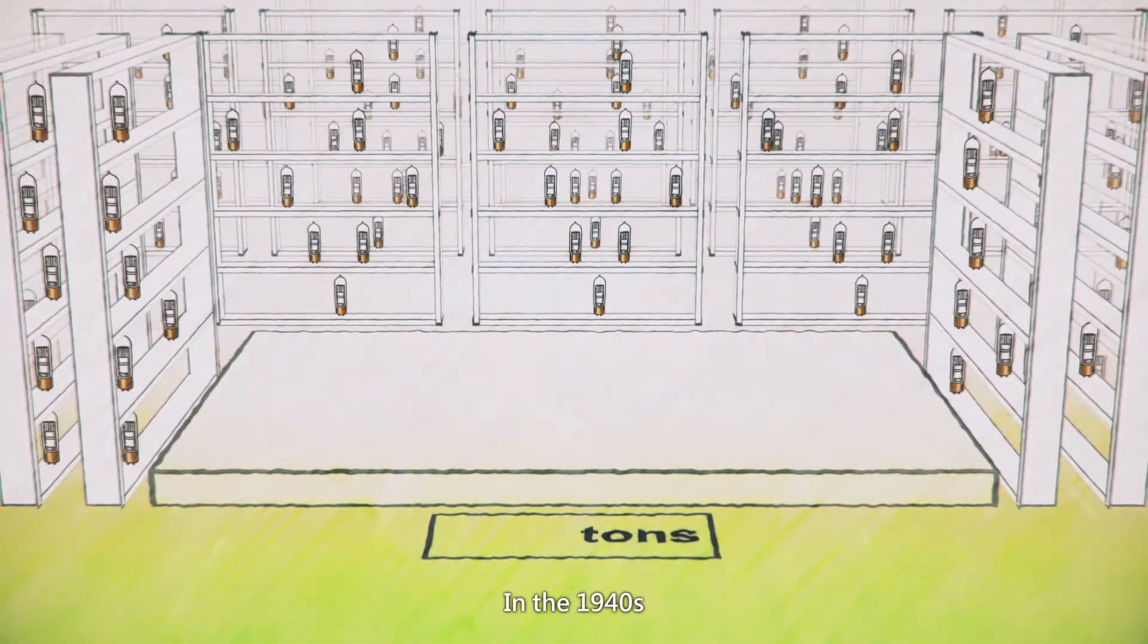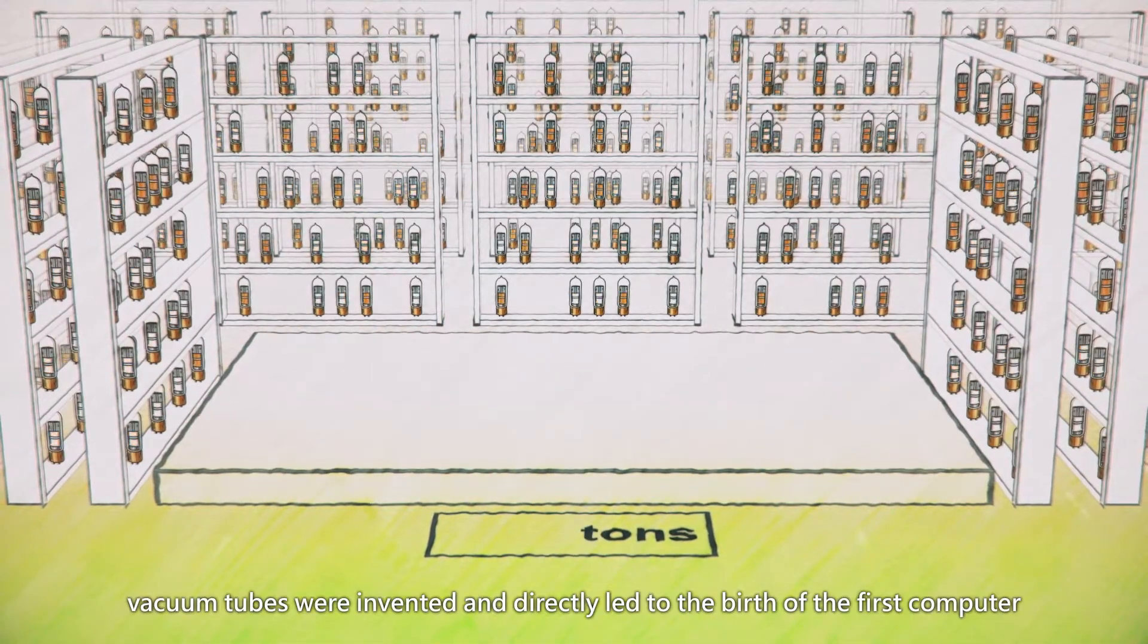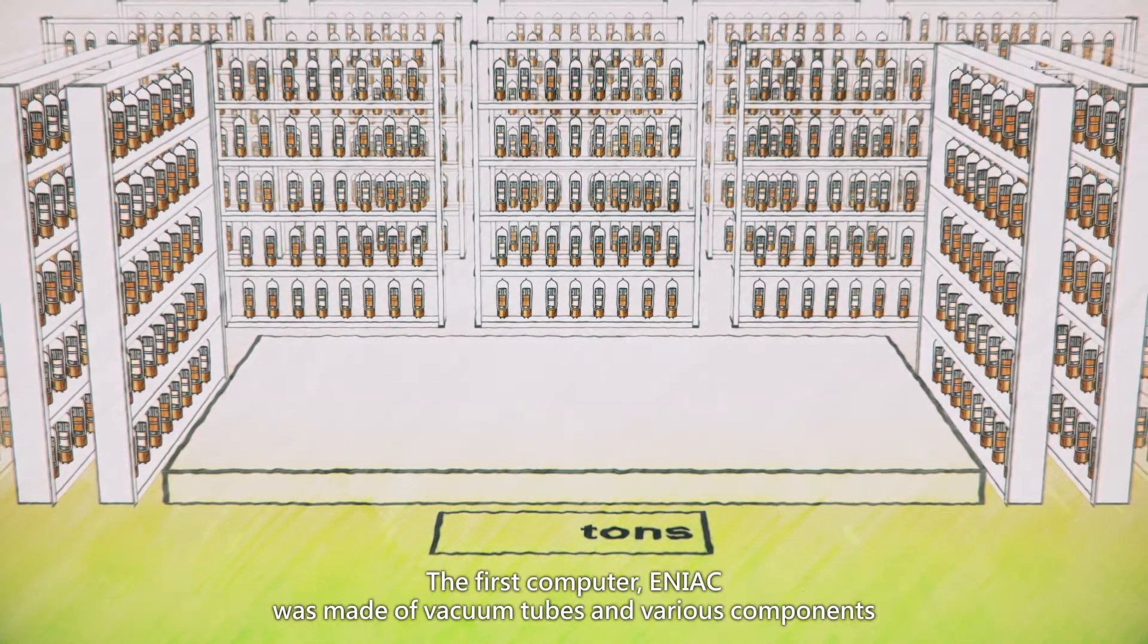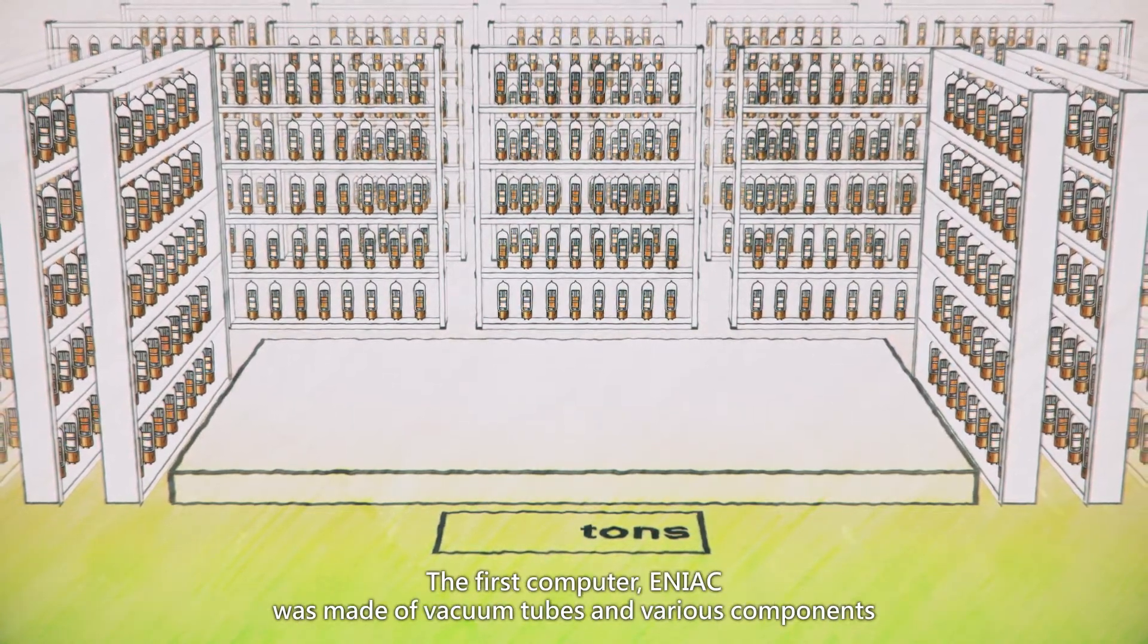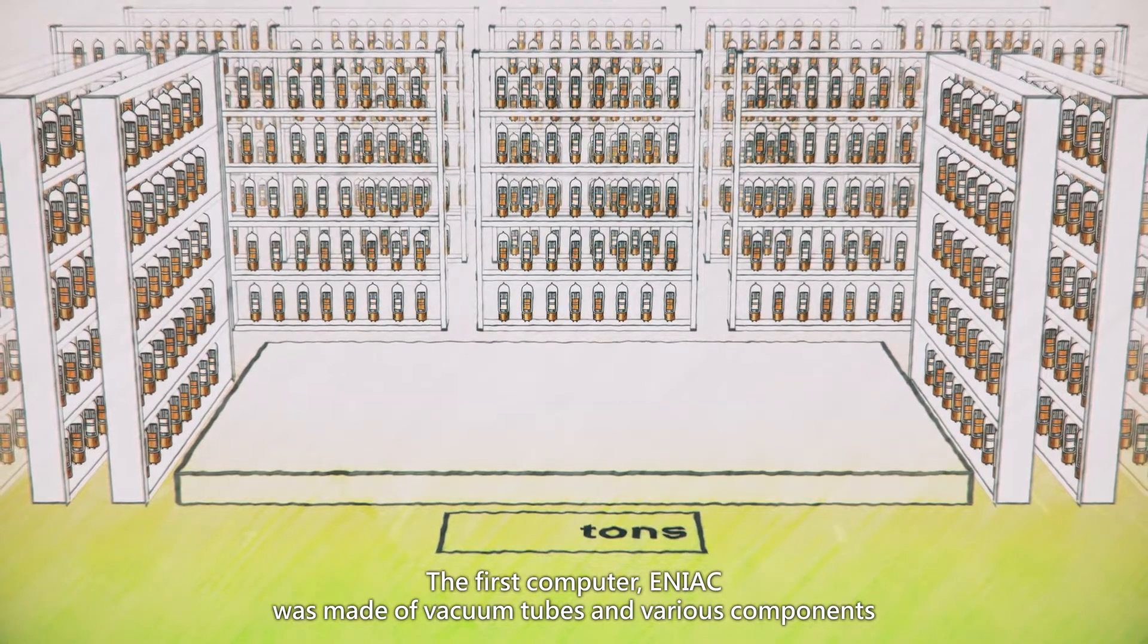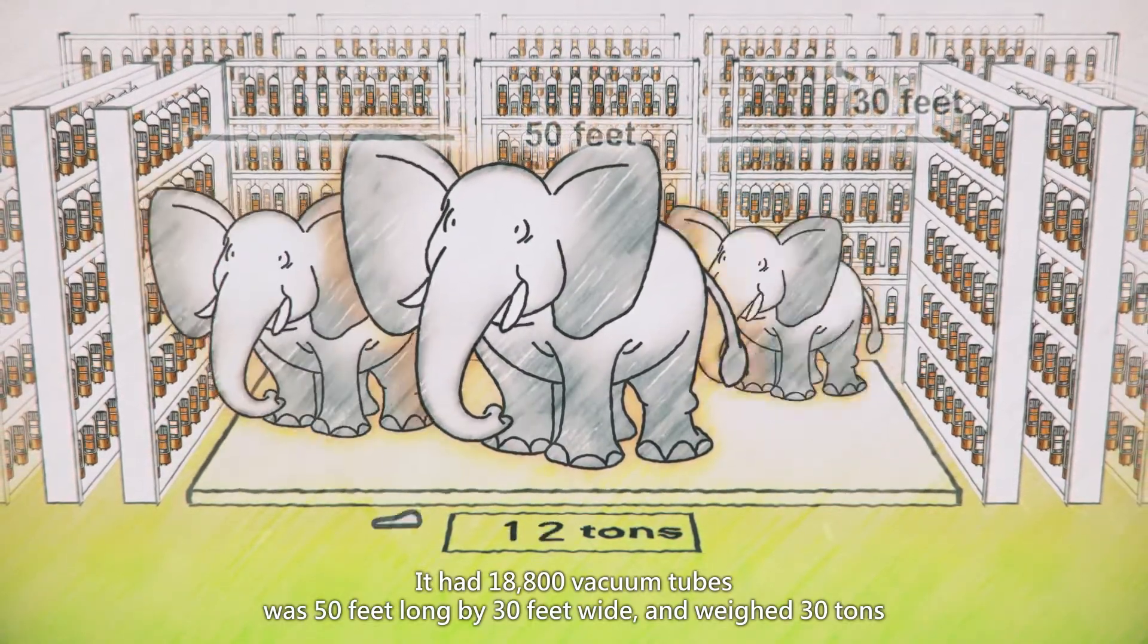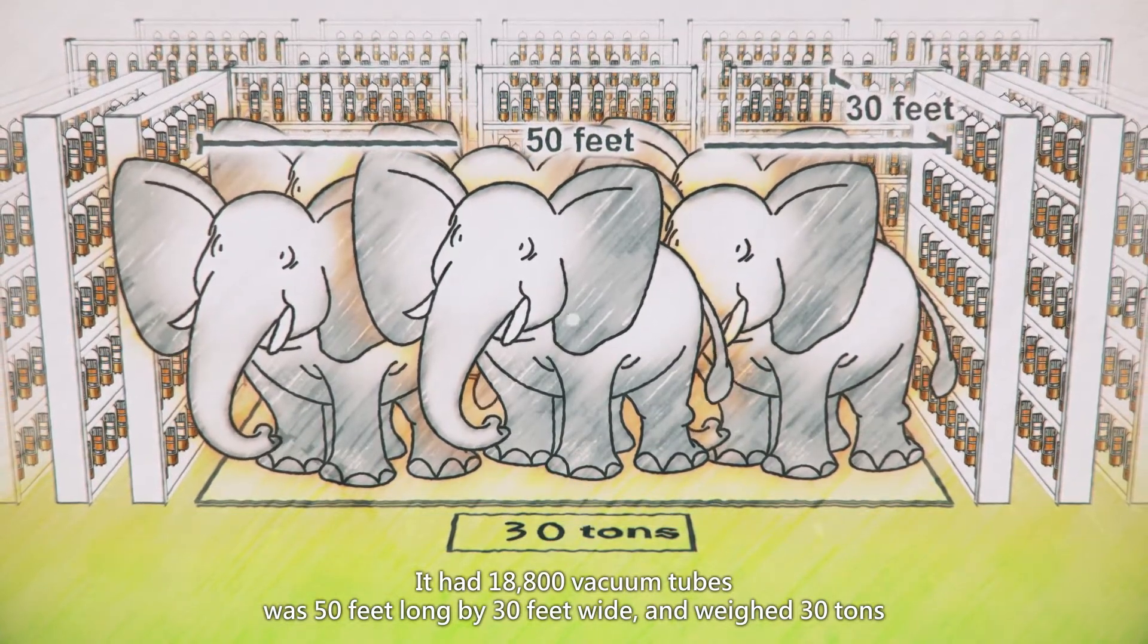In the 1940s, vacuum tubes were invented and directly led to the birth of the first computer. The first computer, ENIAC, was made of vacuum tubes and various components. It had 18,800 vacuum tubes, was 50 feet long by 30 feet wide, and weighed 30 tons.